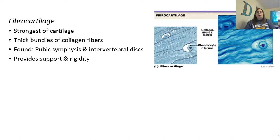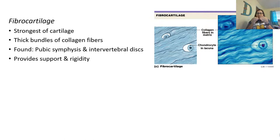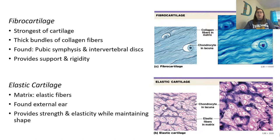Fibrocartilage is the strongest cartilage, with thick bundles of collagen fibers and chondrocytes in their lacunae — it looks like cotton candy. It provides support and some rigidity, found in the pubic symphysis and between intervertebral discs. Elastic cartilage contains a lot of elastic fibers — this is your external ear. It is harder than hyaline cartilage but still provides strength and elasticity, and helps maintain a specific shape, which is why your ear has its particular structure.